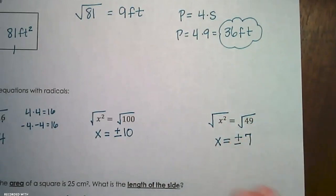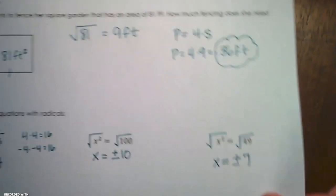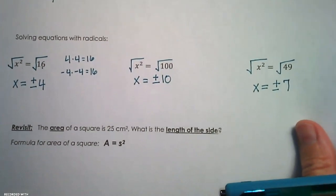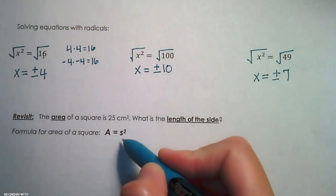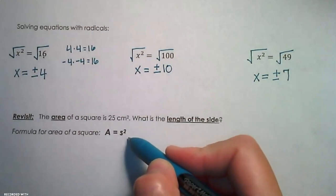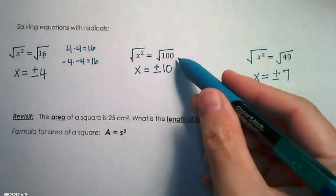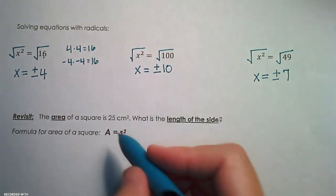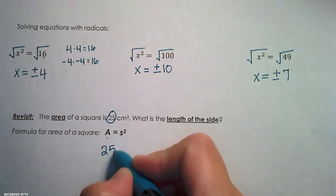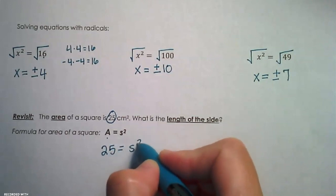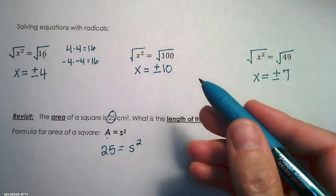I'd like to take this idea of how to solve that equation and go back to the first example with the area of 25 square centimeters. So if I know the formula for the area of a square is area equals side squared, that looks very much like these examples we just did. So if I plug in 25 for the area here, I get 25 equals side squared. We solve it the same way we solve those equations.